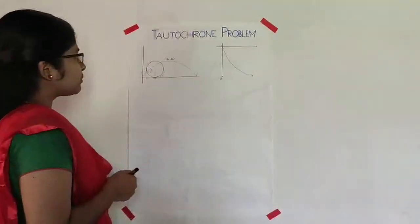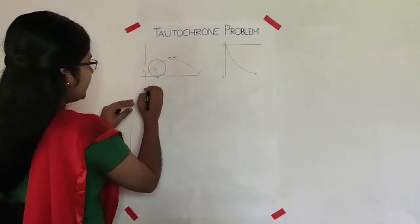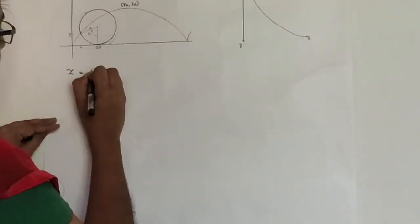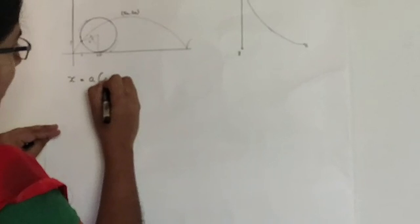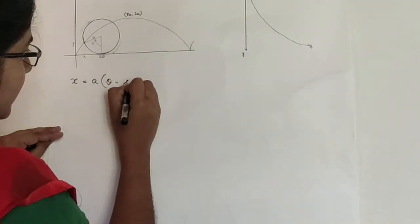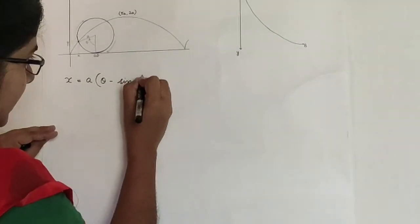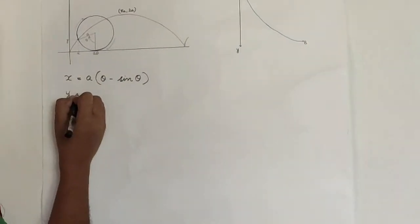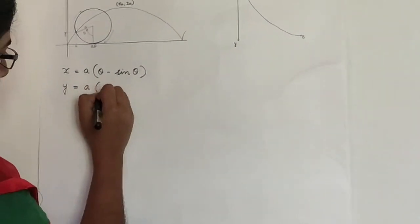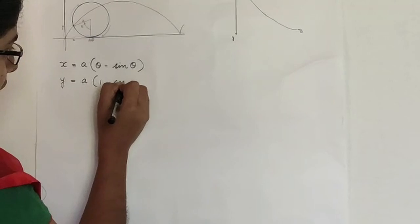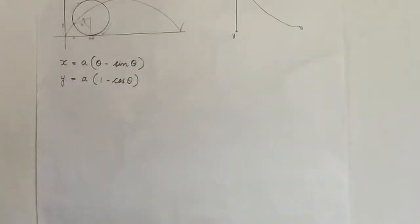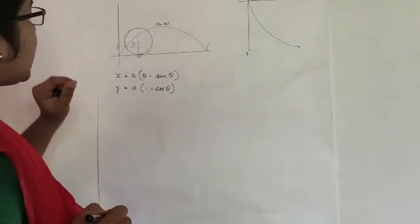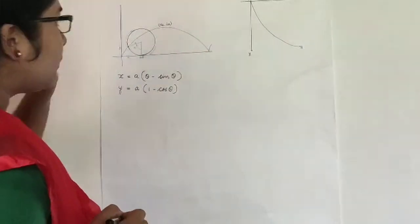The parametric equation of the cycloid is given by: x equals a times (θ minus sin θ), and y equals a times (1 minus cos θ), where a is the radius of the circle and θ is the angle parameter.